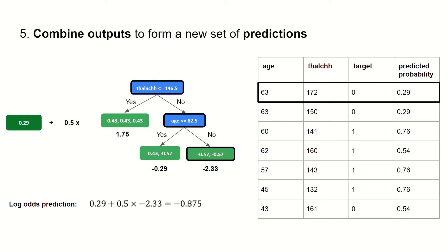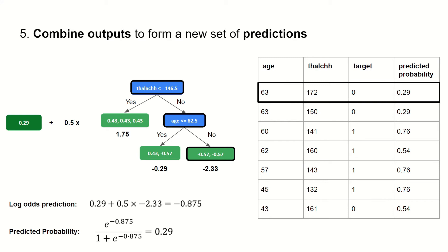For this, we do our initial leaf plus 0.5, which is our learning rate, multiplied by the output from our decision tree. So is the maximum heart rate less than or equal to 146.5? It's larger than that, so no. Is the age less than or equal to 62.5? It's larger than that, so no. And so we go to that leaf, and the output is minus 2.33. So in total, we have 0.29 plus 0.5 times minus 2.33, and that gives us a log odds prediction of minus 0.875. Now we convert this log odds prediction into a predicted probability using the standard logistic function: e to the power of our log odds prediction divided by 1 plus e to the power of our log odds prediction, which gives us 0.29.